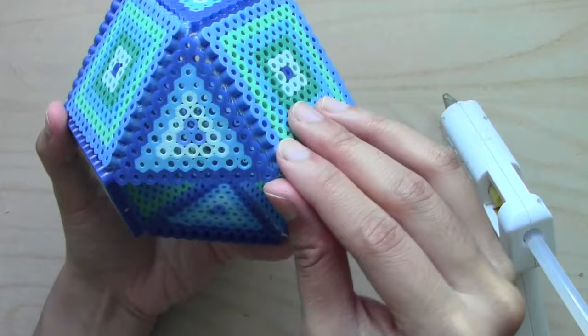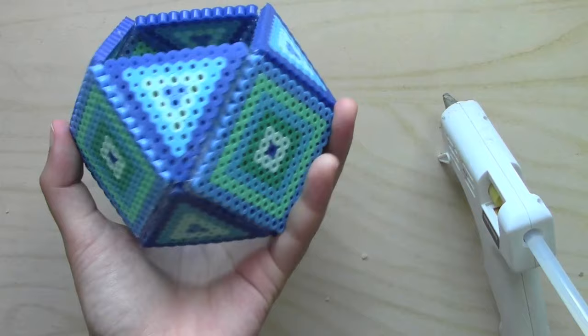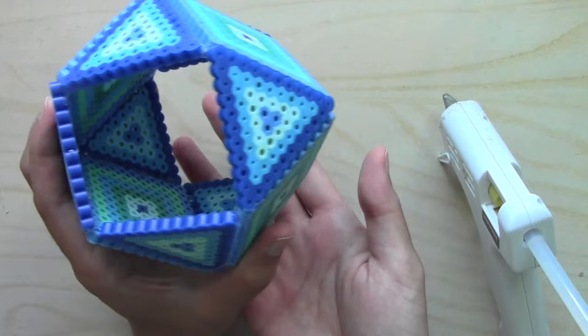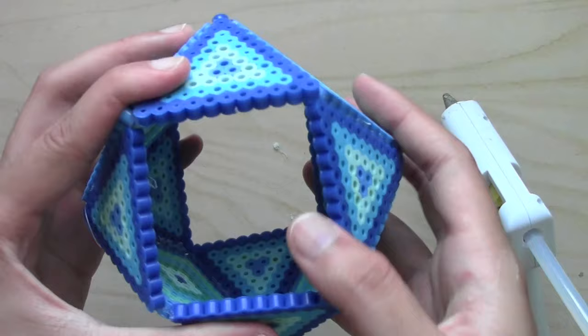The reason why I didn't put a bottom piece is because sometimes you want to water your plant and then there might be some water coming through and this just makes it easier to clean and it saves you a lot of beads as well. However, if you do want to cover it up, all you have to do is make one more 11 by 11 square and just glue it on top.